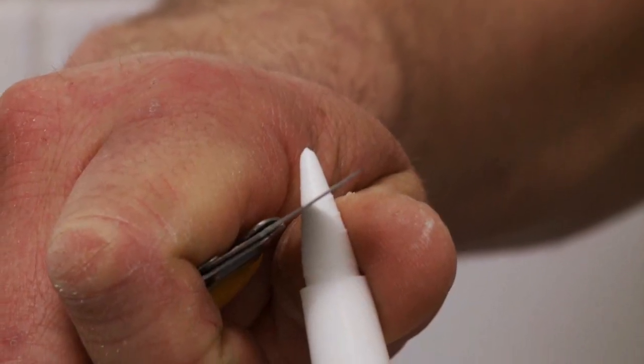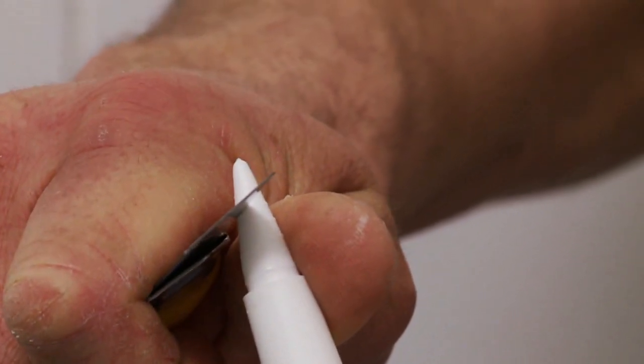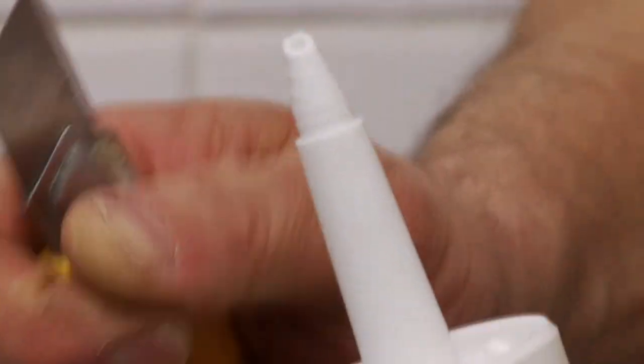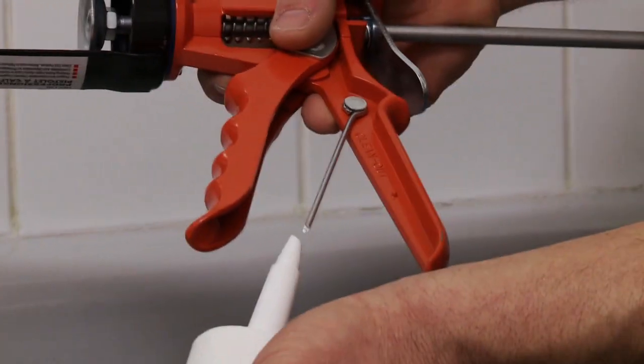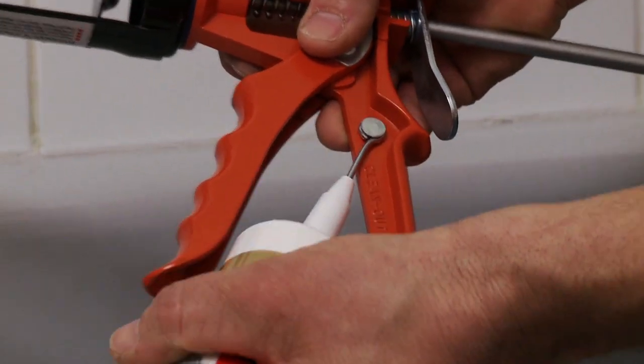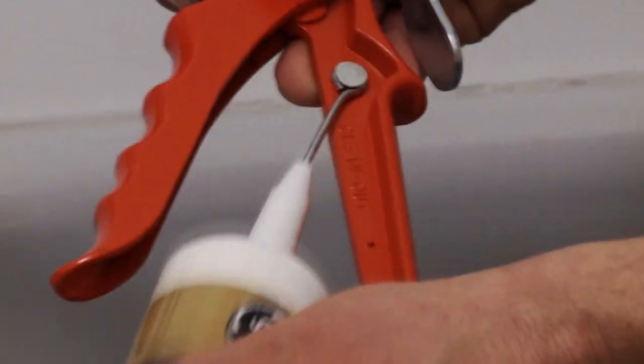Trim the nozzle at a 45-degree angle near the tip like this. You're aiming to create a hole that is just big enough to fill the area between your tub and tiles. Now, pierce the tube so that the caulking can flow easily. Remember, not all caulking is the same. Check the back of the tube for specific instructions for that particular brand.